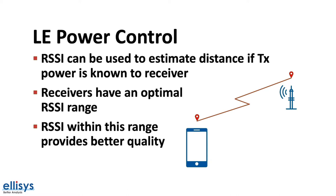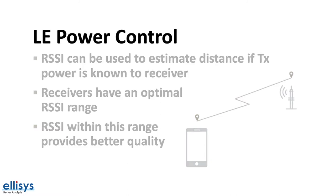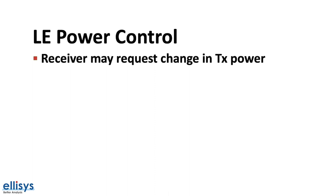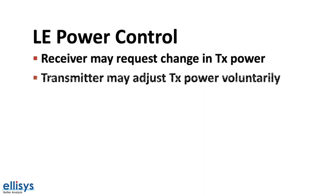With the new LE power control feature, a receiving device monitoring the level of the signal from a connected device may request a change in the transmit power level used by its peer in either direction. A transmitter may also change the transmit power voluntarily and relay that information to the receiver.